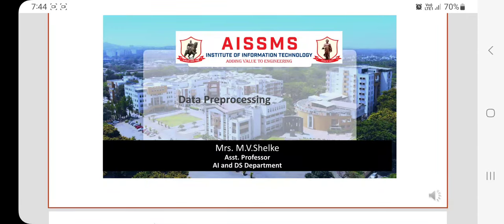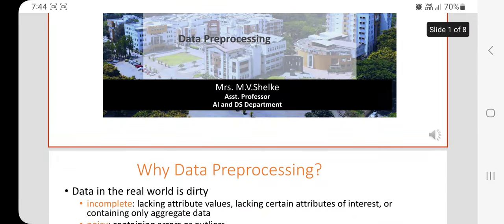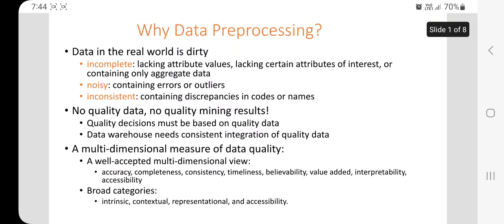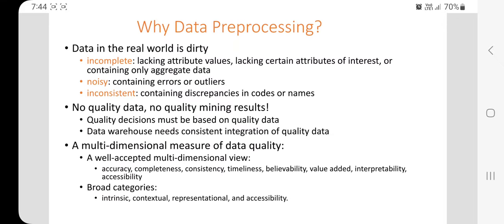In today's lecture we'll discuss data pre-processing. First, we'll see why data pre-processing is needed. We know that data is available everywhere, but data in the real world is dirty — it's not complete. This data is incomplete, noisy, or inconsistent, meaning it lacks attribute values, contains errors, or has inconsistencies. It is not quality data, so we cannot get mining results properly.